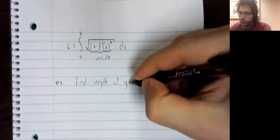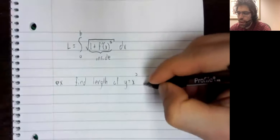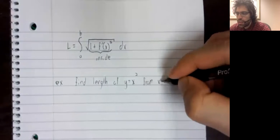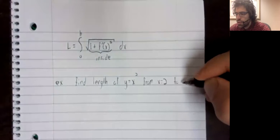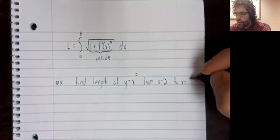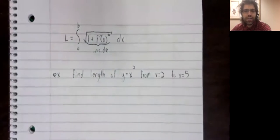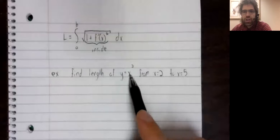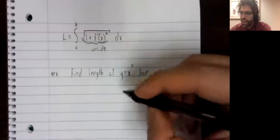So even the simplest curves, find the length of y equals x squared from x equals 2 to x equals 5.